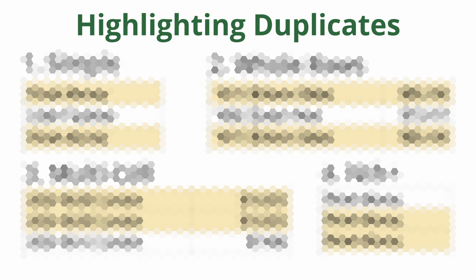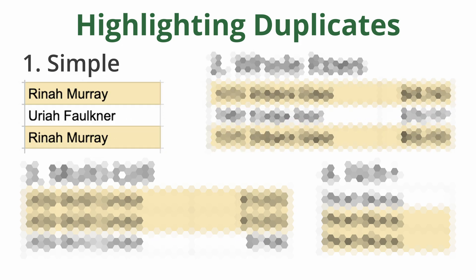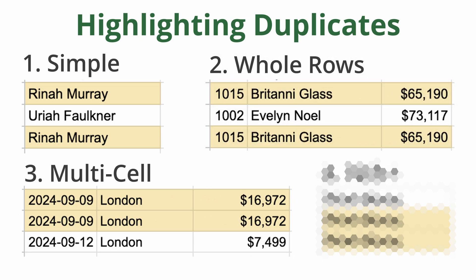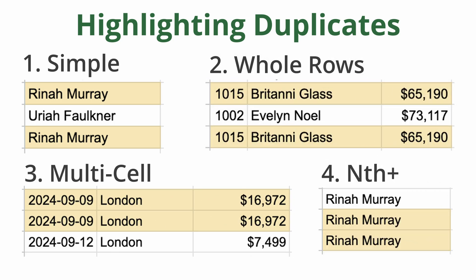Hi everyone. One of the most common tasks in Google Sheets is identifying and removing duplicate entries. Luckily, Google Sheets makes it easy. In this video, we'll explore different ways to highlight duplicates using conditional formatting. We'll cover highlighting repeated values, whole rows with repeated values, multipart duplicates, and highlighting only second, third, and so on duplicates. So, let's dive in.